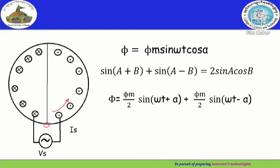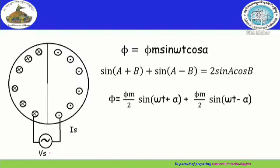The magnetomotive force at this point is maximum, and as we move with respect to the stator axis, the magnetomotive force decreases. This can be explained using the given graph — the MMF is maximum at this point and keeps decreasing as we move along the stator axis. The flux Phi is given by the expression Phi_M sin(ωt)·cos(α), where alpha is the angle. We consider this as equation 1, which can be further simplified into two components using trigonometric ratios.